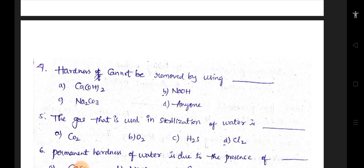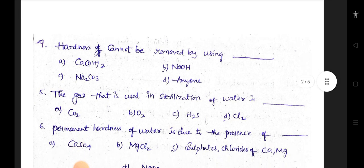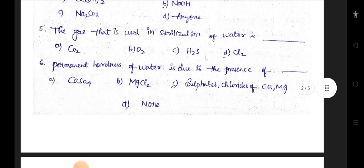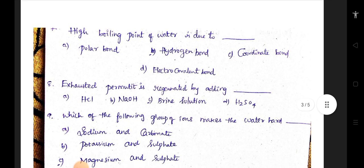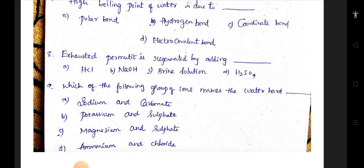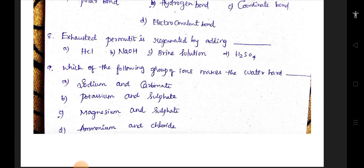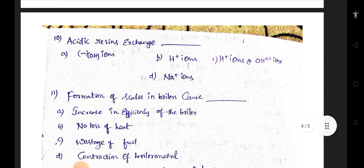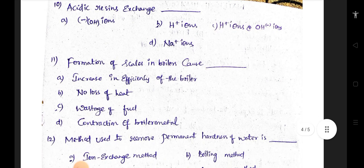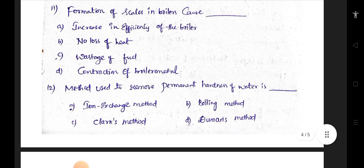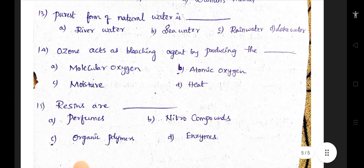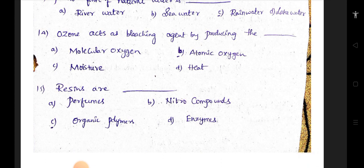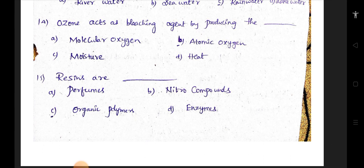Hardness cannot be removed by using which of the following elements? The gas that is used in sterilization of water? Permanent hardness of water is due to the presence of what? Boiling of water? Permeability is regenerated by adding which element? Which group of elements makes the water hot? Acid presence exchange? Formation of scales in boilers causes what? Method used to remove permanent hardness of water? Purest form of natural water is present in? Ozone acts as a bleaching agent by producing what? Perfumes are nitro compounds or organic polymers or enzymes?